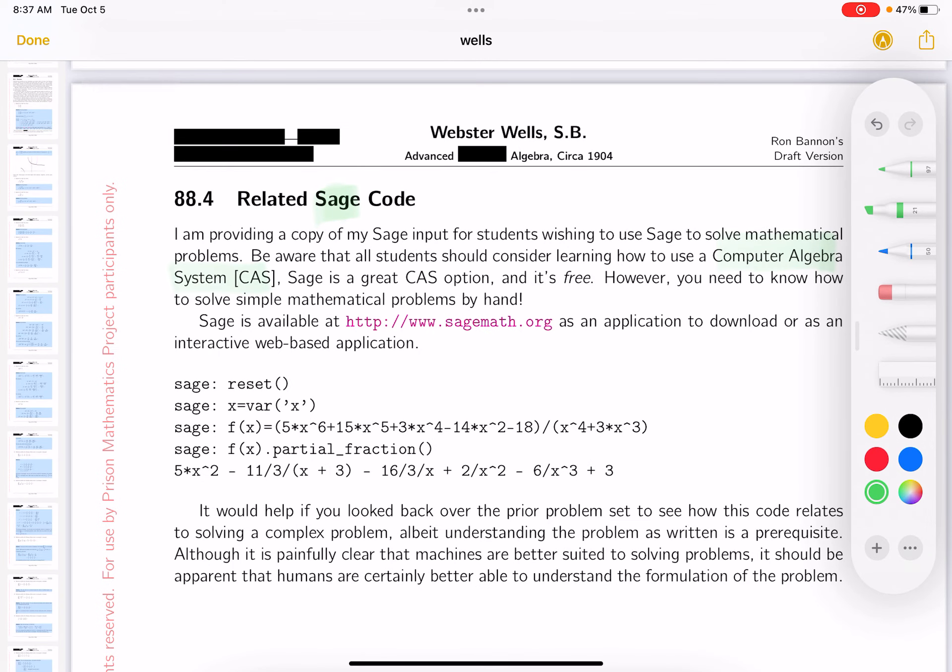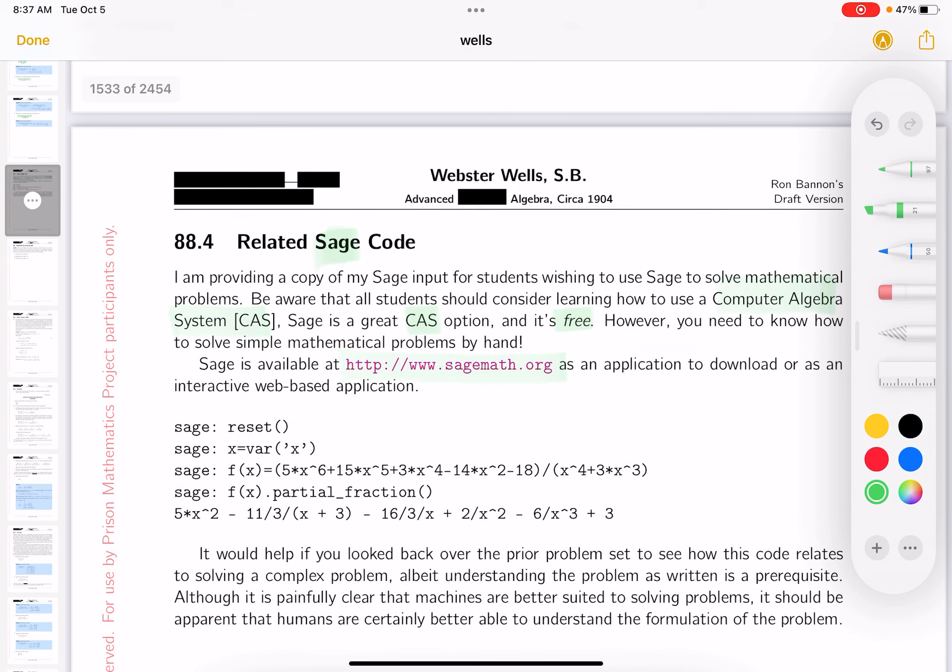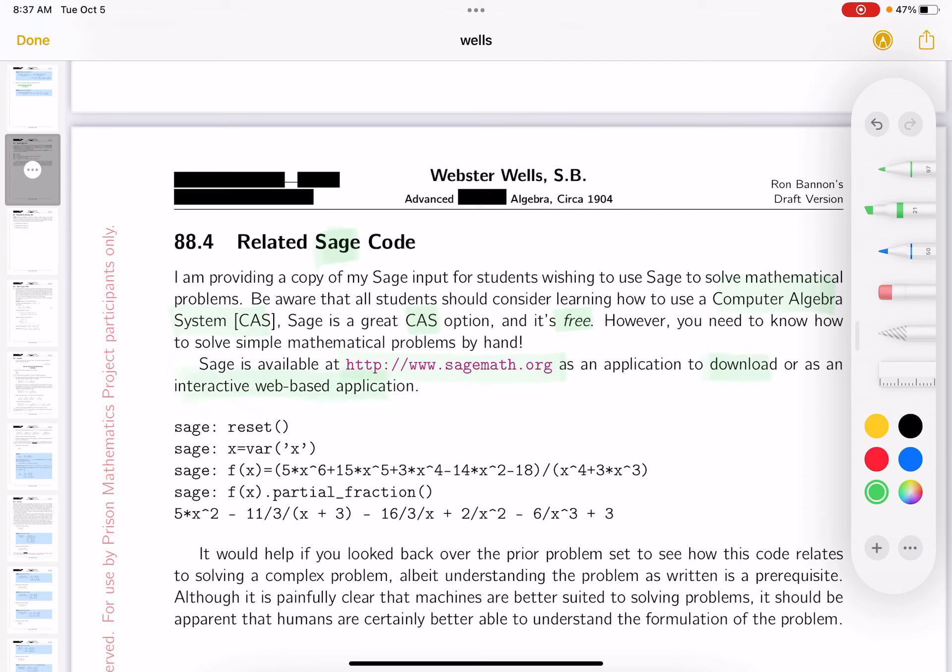Then you get to the Sage thing. What's Sage? Hope you're getting familiar with this. It's a computer algebra system or CAS. It's free. What I mean by that is open source software. Go to this website over here—that's clickable if you have the PDF document, the electronic form of it. You're going to either download the application or use the interactive web-based application. We've discussed this a long time ago when we were first introducing this text.